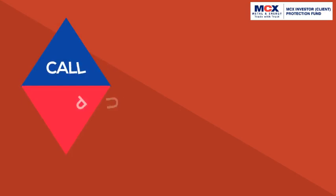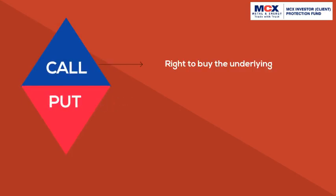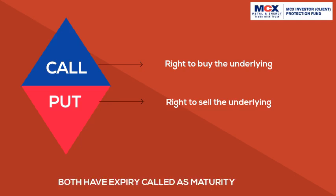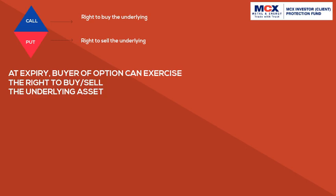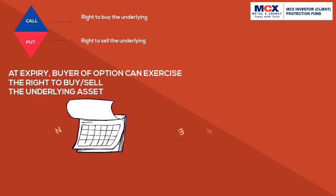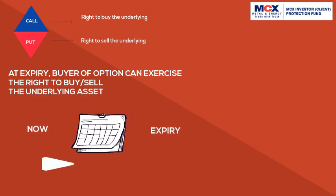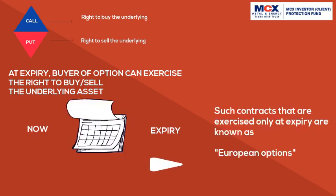Options are of two types. Call options give the buyer the right to buy the underlying asset. Put options give the buyer the right to sell the underlying asset. Both these options expire on the maturity or expiry date of the contract. Contracts that are exercised only at expiry are known as European options. In Indian commodity derivative exchanges, the regulator has allowed trading of European options only.